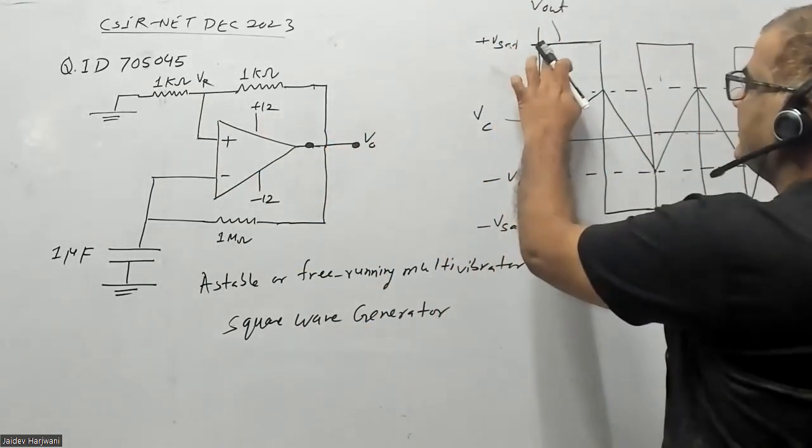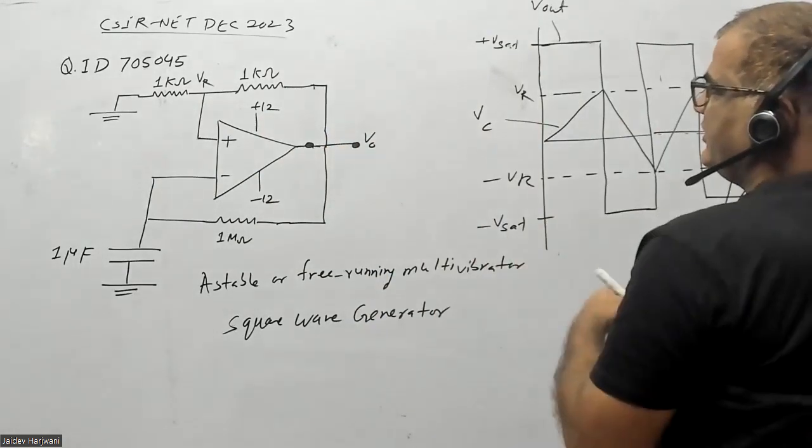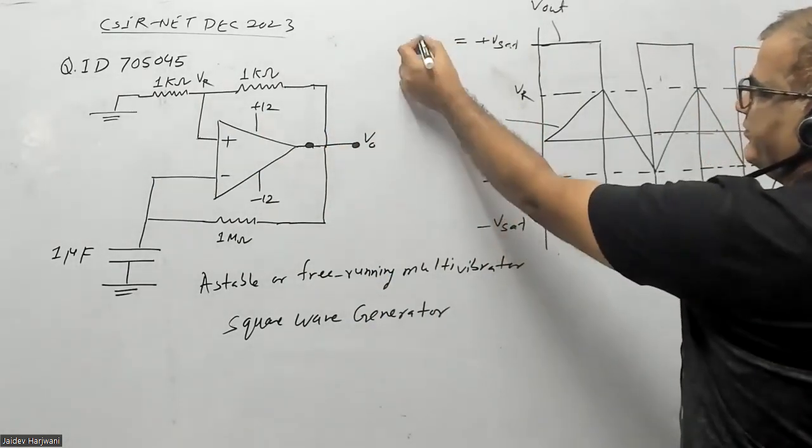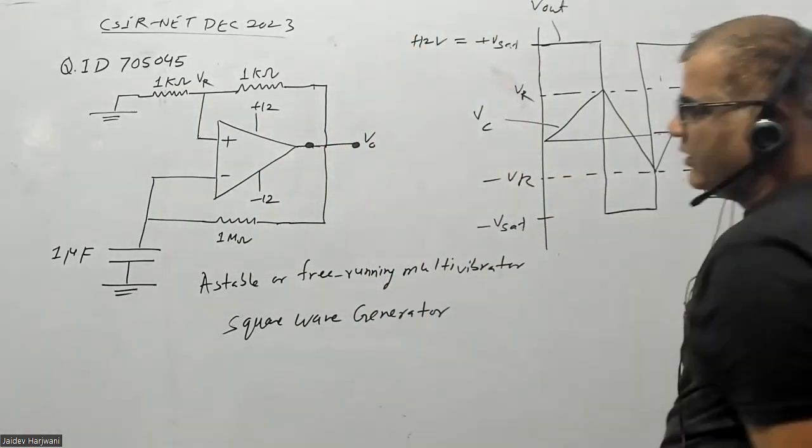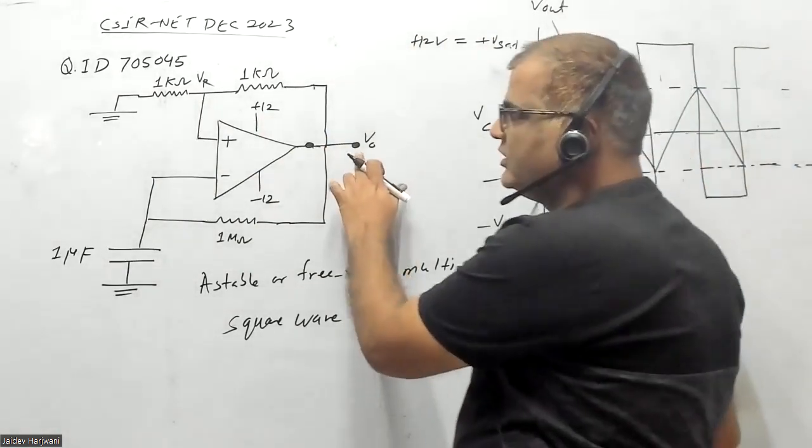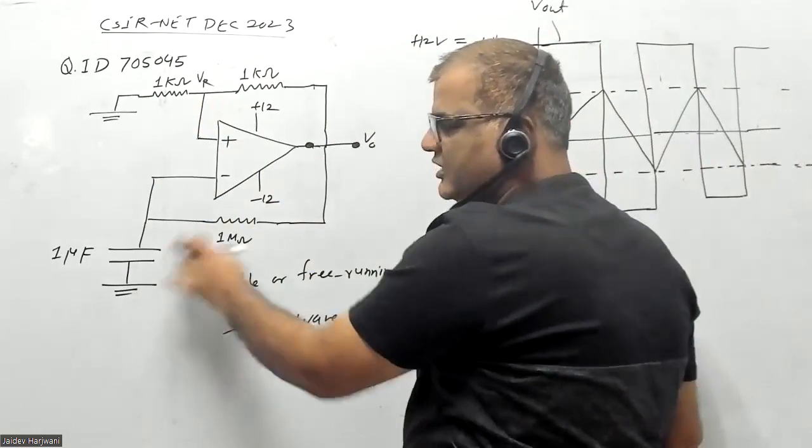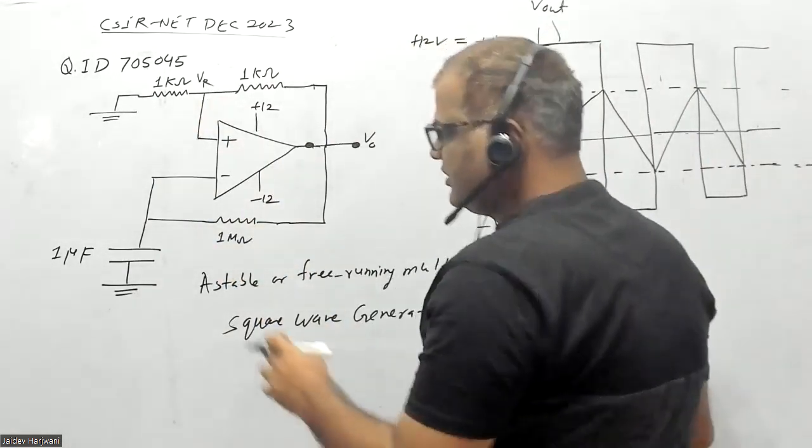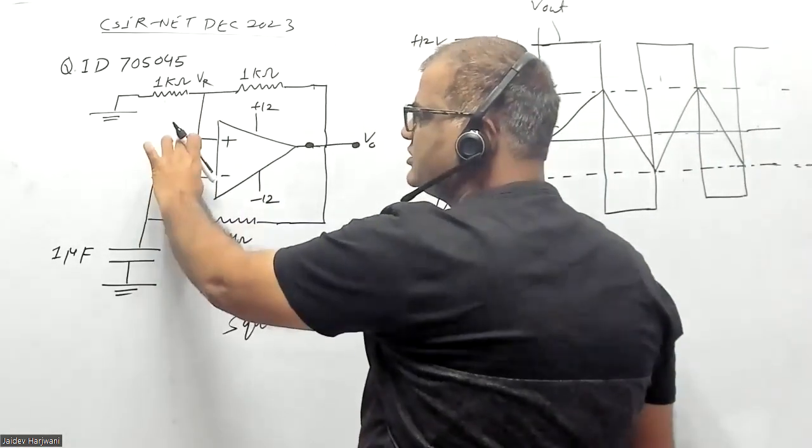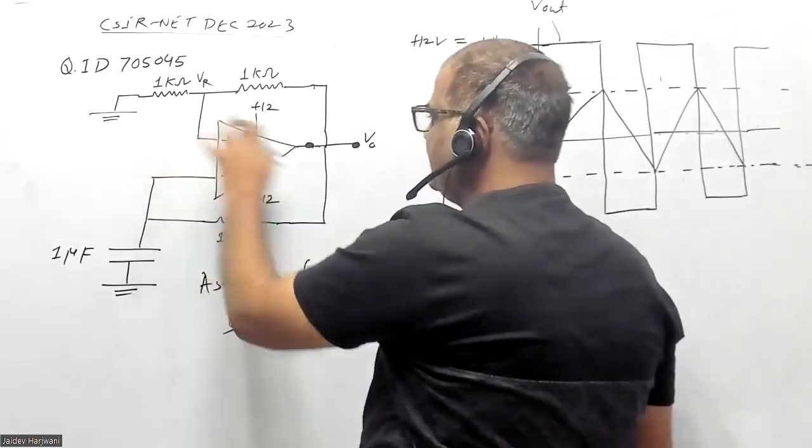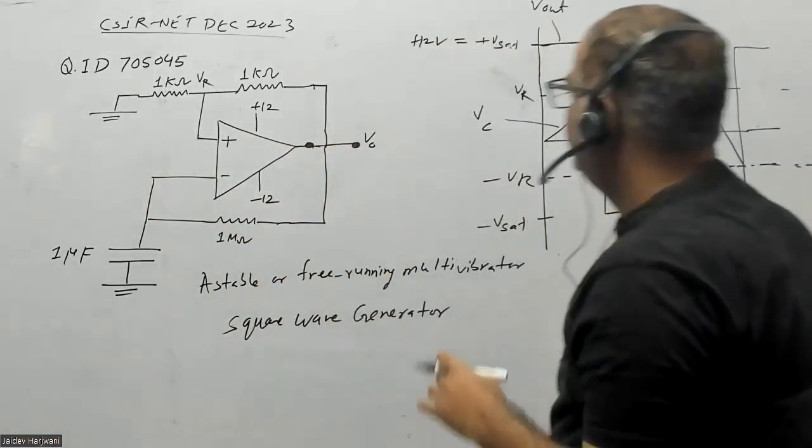Let us assume that initially it is in plus V saturation, which is equal to plus 12 volts. If there is plus 12 volts, immediately some voltage will come here because we can assume the capacitor is initially uncharged, so here there will be no voltage. This difference is positive, which is making this output equal to plus V saturation.